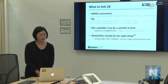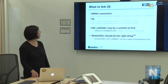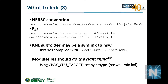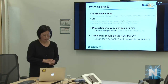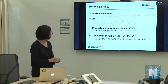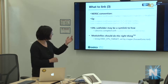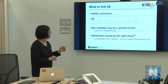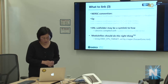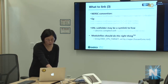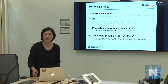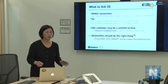NERSC software follows the convention: software path includes the package name, version, and then either 'haswell' or 'knl', followed by the compiler. For example, PETSc 3.7.4 has both HSW and KNL builds with Intel and other compilers. These libraries are mostly built with the -ax option, so they will choose the correct architecture at runtime.